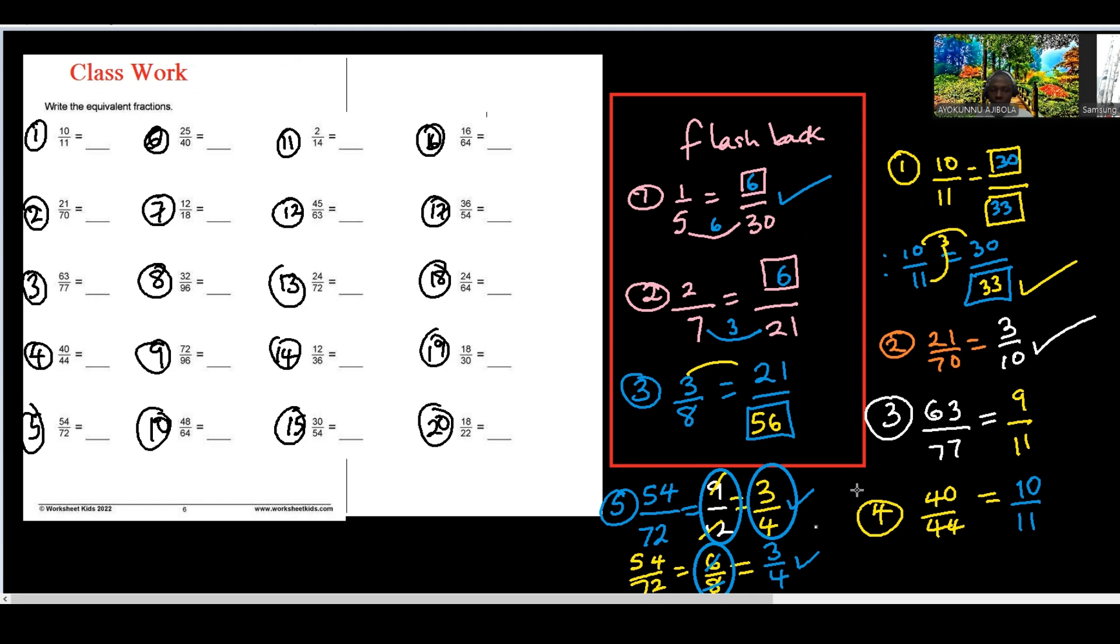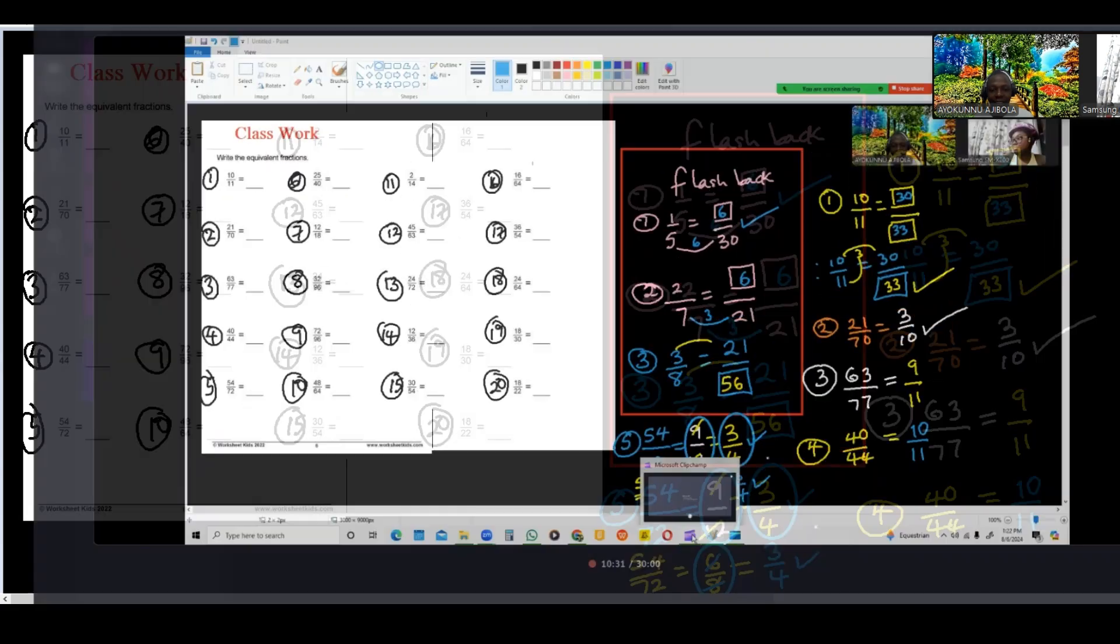So I want you to write down this flashback, write down this solution to 1 to 5, then you will now try the next five from probably 6 to 10, or 6 to 15 if you can. So if you think you can try everything, so be it. Is that clear? Yes, sir. So when you are done, you let me know. But if you get stuck at any point, alert me at once. Alright, thank you. I'm gonna wait.